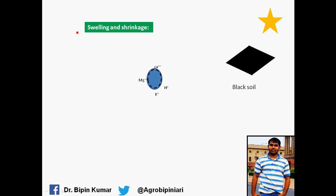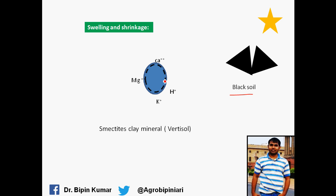Soil colloids also have swelling and shrinking properties. A good example is smectite clay, which is mainly found in black soil. In dry conditions, the black soil forms cracks. When rain occurs and the black soil is hydrated, the size of the colloids increases. Because of this increase in size, the pore spaces inside the black soil get blocked. That is why infiltration is very low in black soil at a later stage. At the early stage water enters quickly through the cracks, but once the soil is wet, the colloids swell and block the pore spaces, making infiltration very low. This is why infiltration is the biggest problem in black soil.